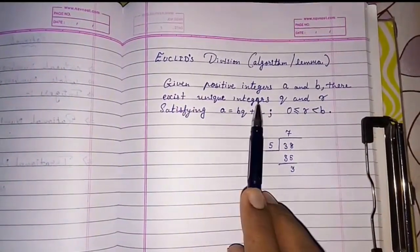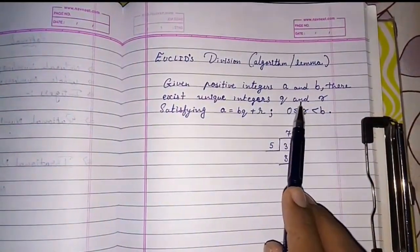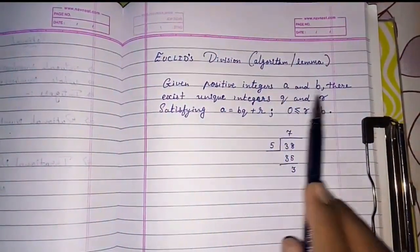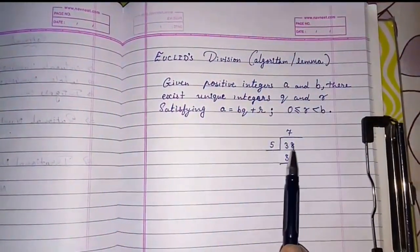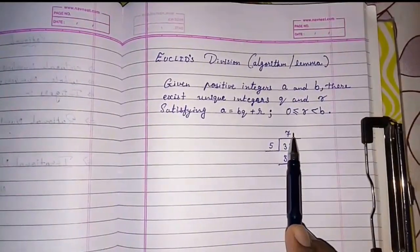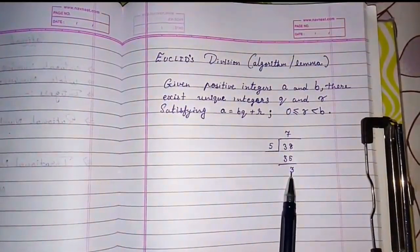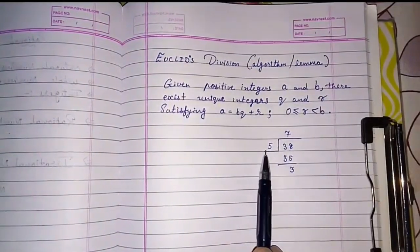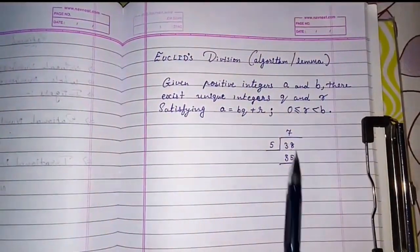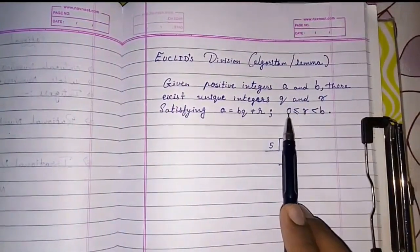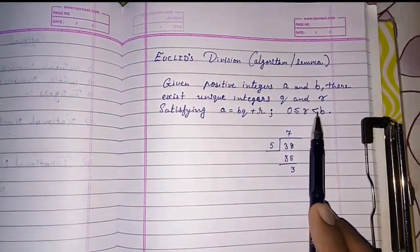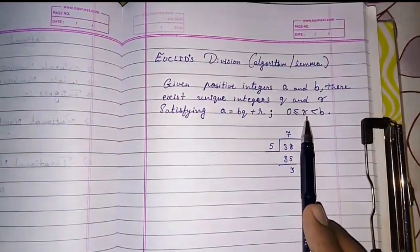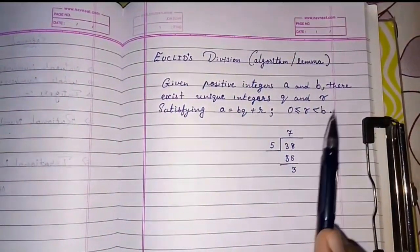There exist unique integers q and r satisfying, means these are q means quotient, r means remainder. If I divide two numbers, I will get quotient and remainder. This is q, this is r, this is a and b. What will be r? They said r is equal to or greater than zero or r is less than b.